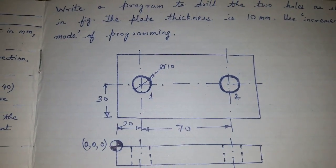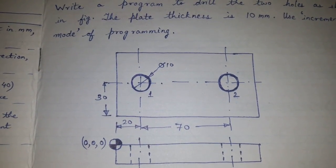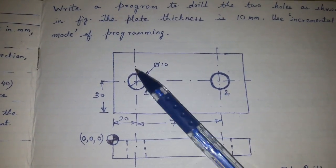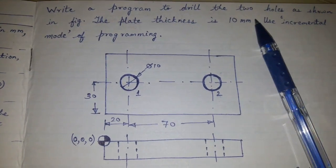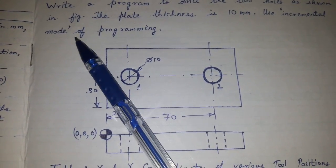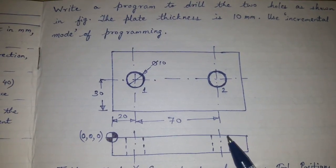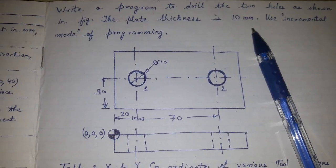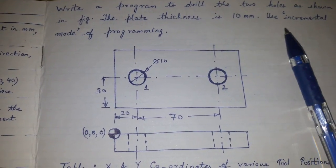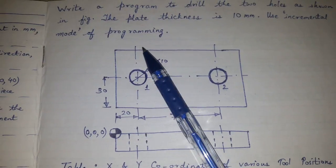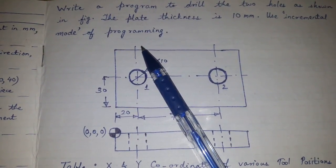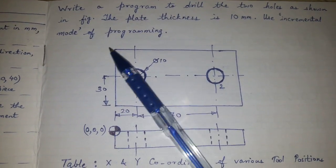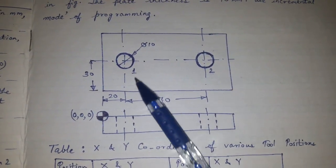Today's topic of discussion is part programming for a drilling operation. The question is: write a program to drill two holes as shown in the figure. The plate thickness is 10 mm. If not given, you can assume 5 mm or 10 mm. Here it is given. We will use incremental mode of programming.